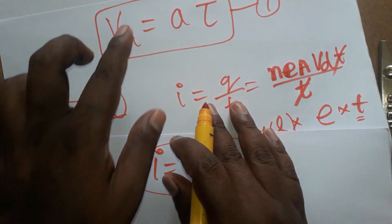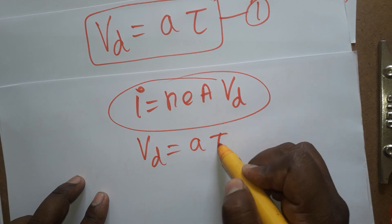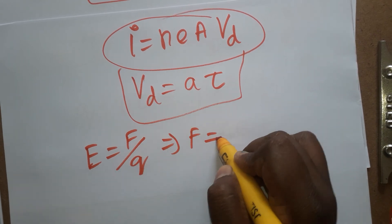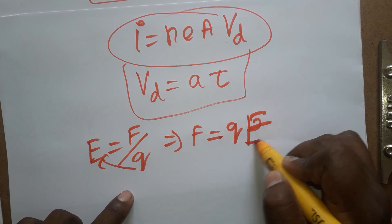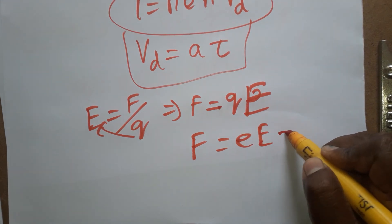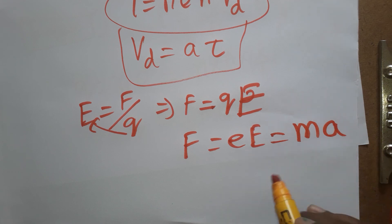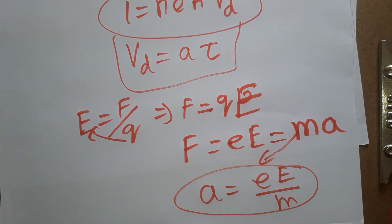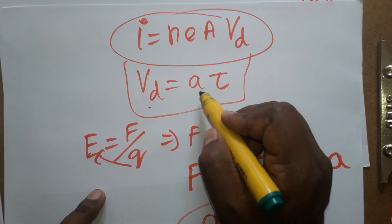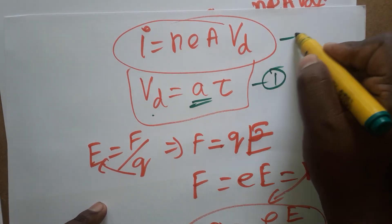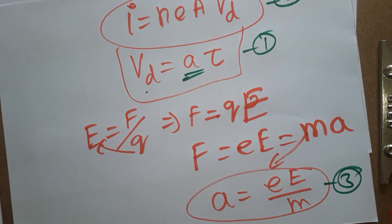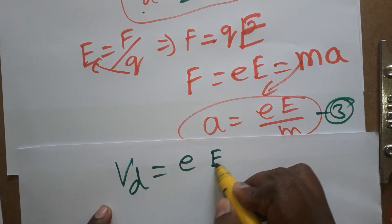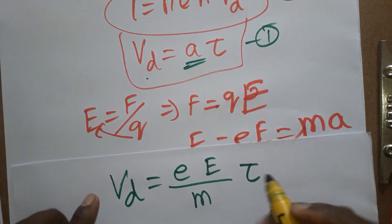We already know vd = a·τ. Also, electric field E equals force per unit charge, so force F = qE = eE for an electron. From Newton's second law F = ma, we get acceleration a = eE/m. This is equation three. Substituting equation three into equation one gives vd = (eE/m)·τ.